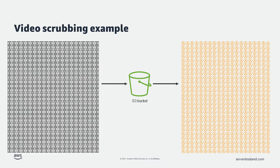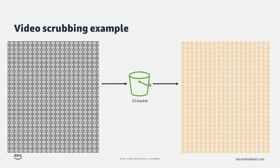To take this pattern a step further, it is also possible to directly invoke an AWS Step Function from Amazon S3. Using Amazon EventBridge as the go-between, S3 can drop an event on the bus and an EventBridge rule will match the event and invoke the Step Function with the data from the event.